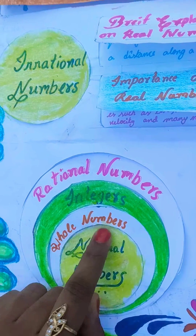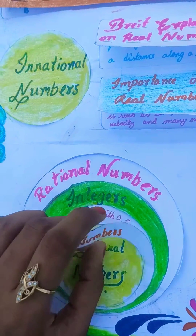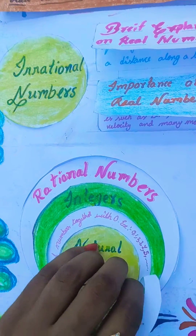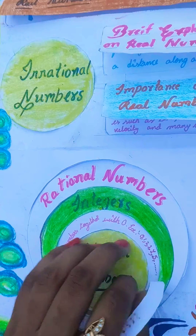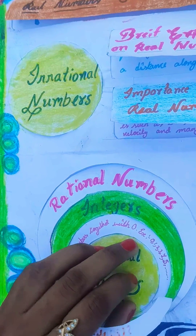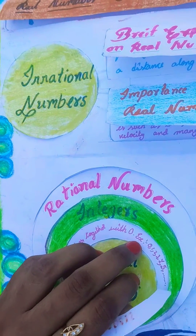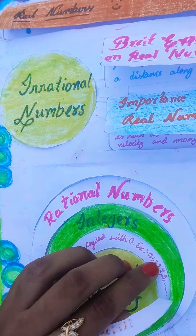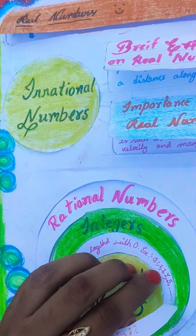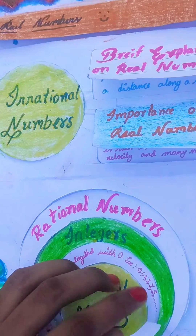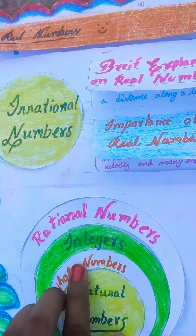Now, whole numbers. Natural numbers together with 0 are called whole numbers. Example: 0, 1, 2, 3, 4, 5, and so on.